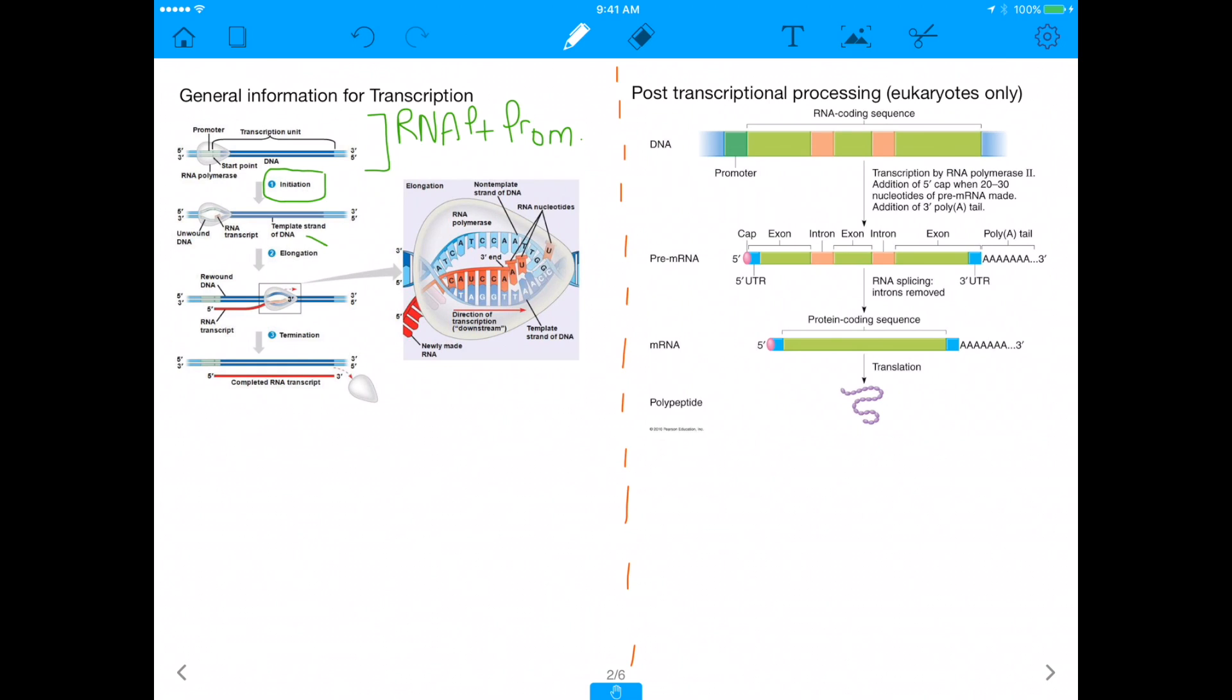Okay, and then the second step is elongation, which now that the RNA polymerase is bound to the promoter, it's going to go ahead and start transcribing the mRNA. And last but not least, you have termination, where the transcription is complete, and you have a complete mRNA transcript, which can then turn into protein.